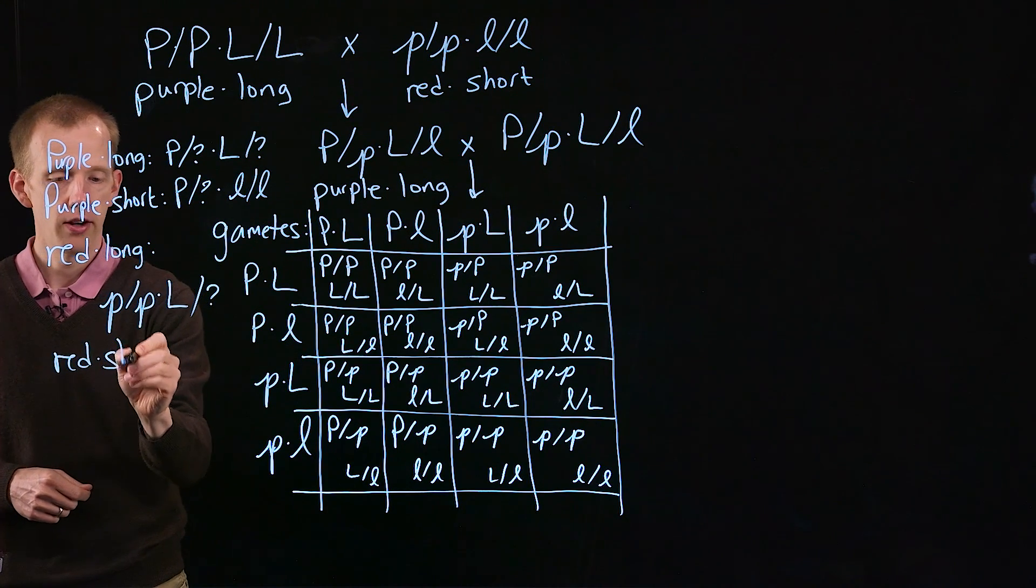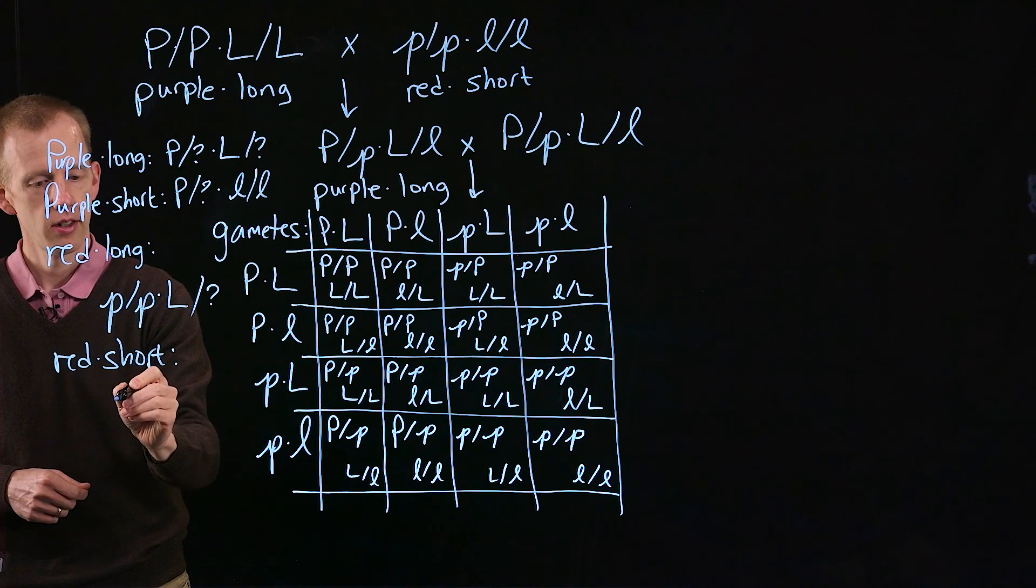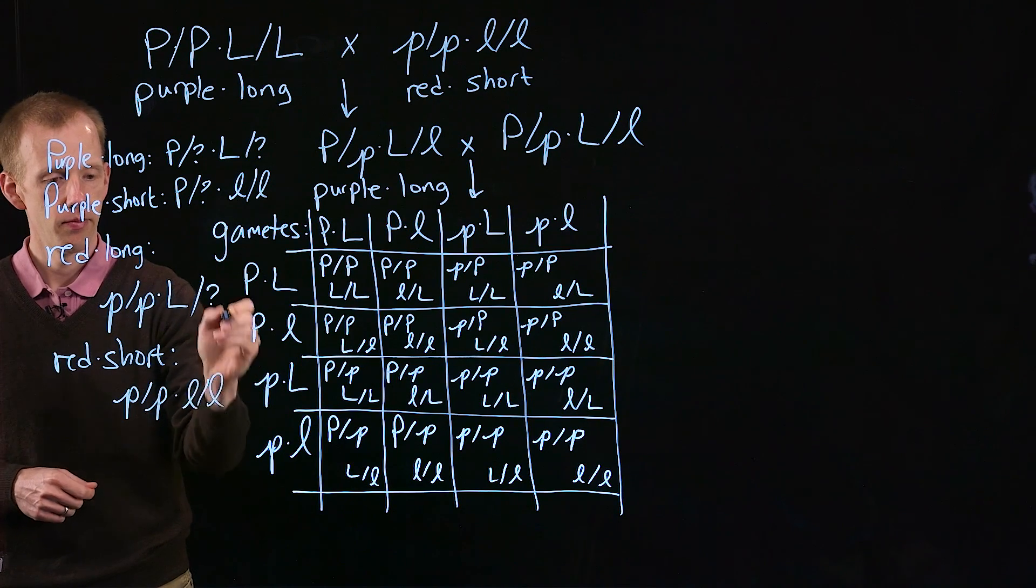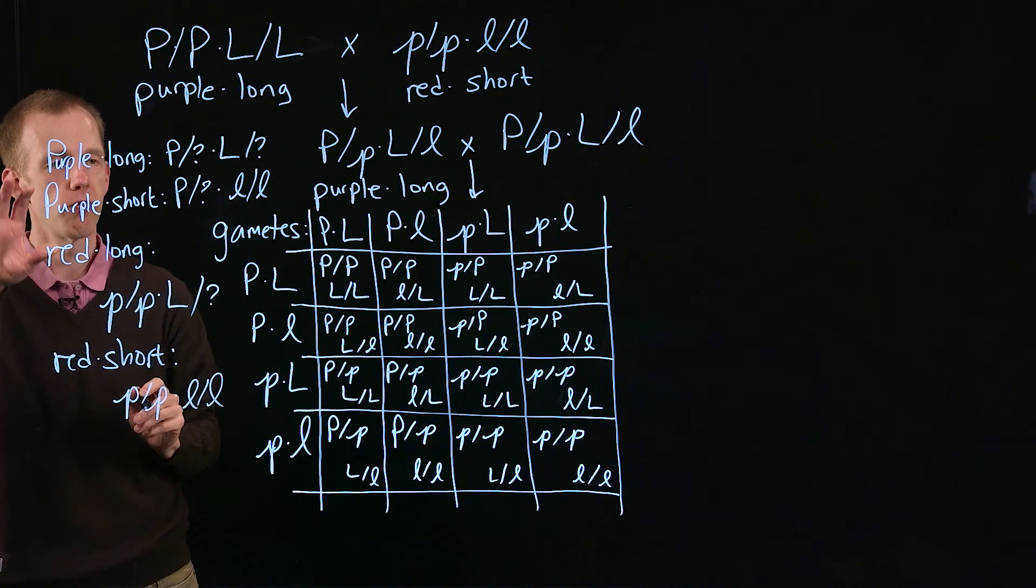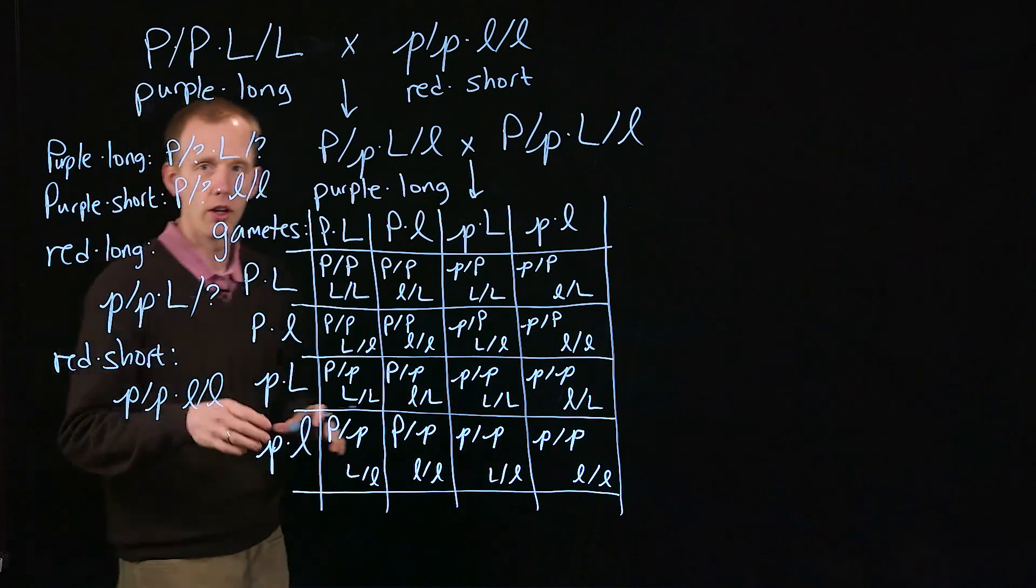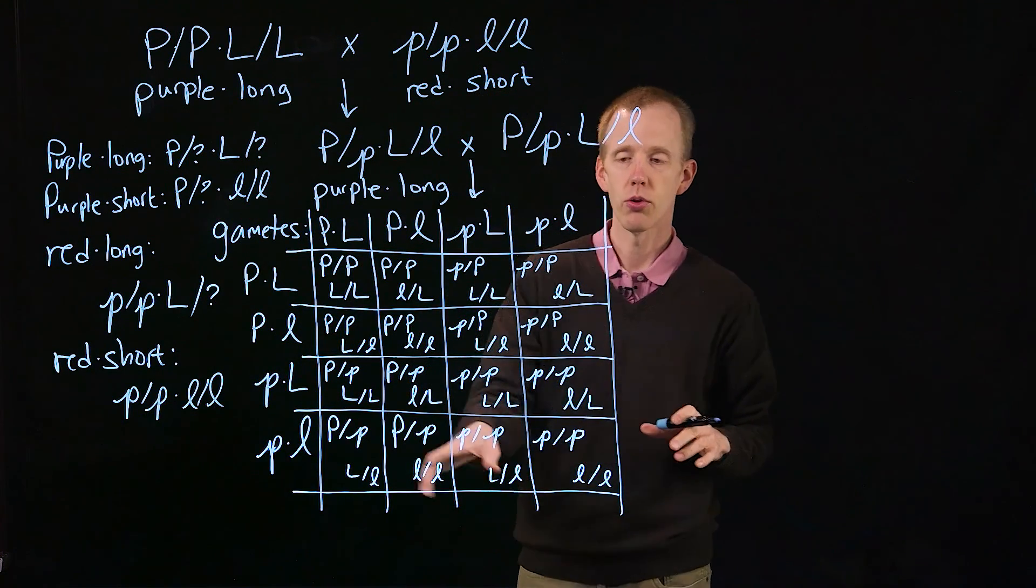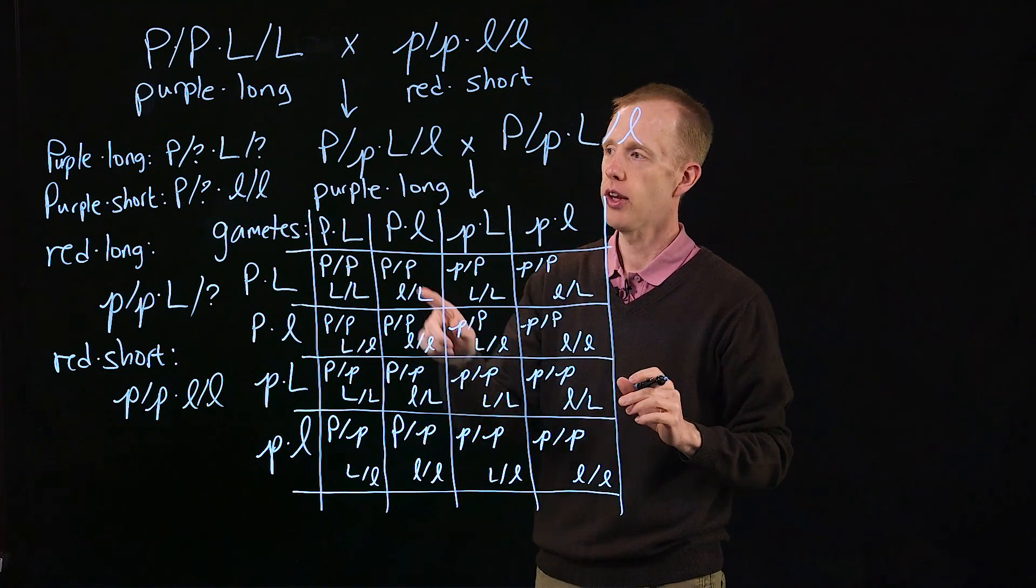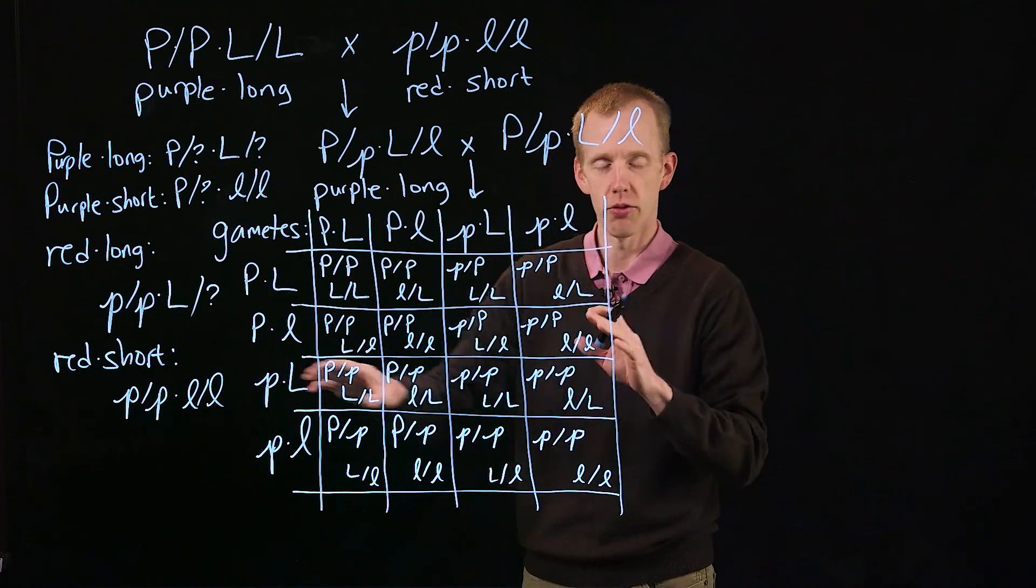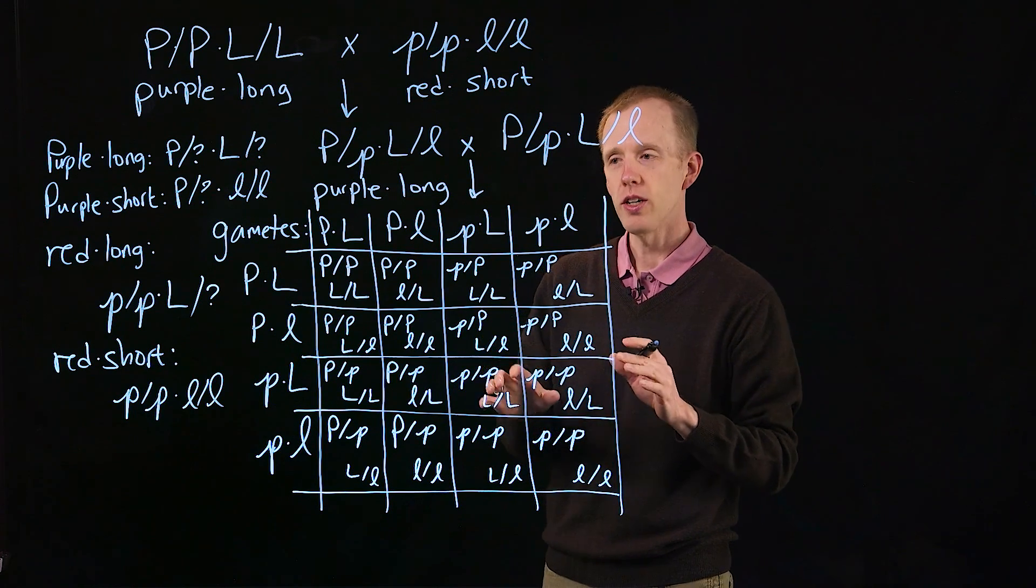And if we want red short, that will be only one type of genotype. So we have four different types of phenotype combinations that we can produce from this cross. What I'd encourage you to do now is look through this entire table and figure out how many of each phenotype there are.